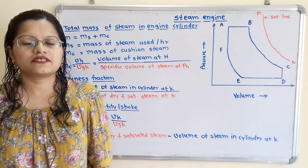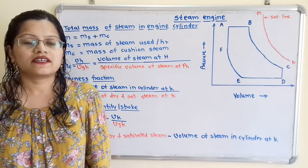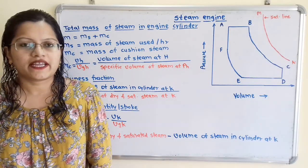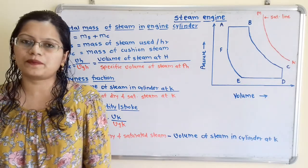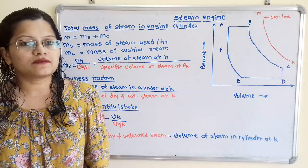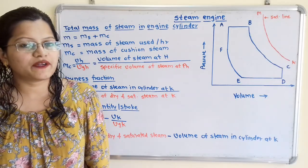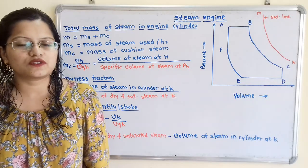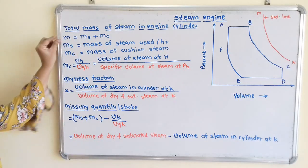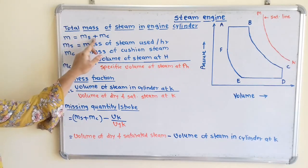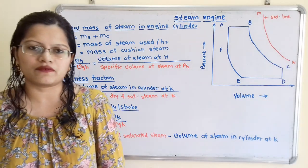Let us first understand the concept of total mass of steam. We know that a steam engine takes a certain mass of steam from the boiler during each stroke of the piston, and some steam is left behind in the clearance space. This steam left behind in the clearance space is known as the cushion steam. So the total mass of steam m is equal to ms plus mc, where ms is the mass of steam used per hour.